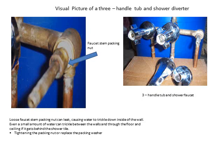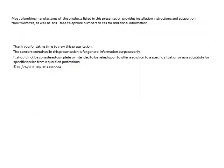Here's a picture of a three-handle tub and shower diverter, and a large blow-up of faucet stem packing. Loose faucet stem packing nuts can cause water to trickle down inside the wall. Even a small amount of water can trickle between the walls and through the floor and ceiling if it gets behind the shower tile. Tighten the packing nut and replace the packing washer. Most plumbing manufacturers of the products listed in this presentation provide installation instructions and support on their websites, as well as toll-free telephone numbers for additional support.